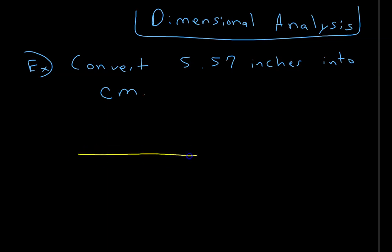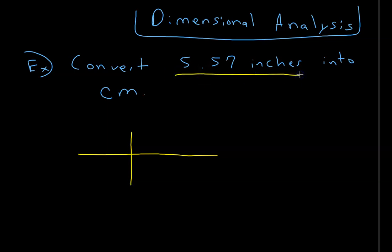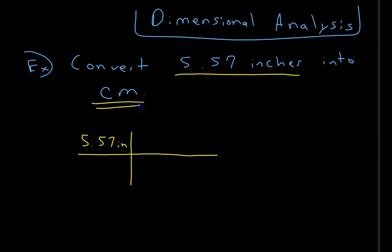We're going to use the picket fence method. You take the unit you're given — 5.57 inches — and place it here. Then you think about the unit you're going into, centimeters, and put centimeters on top.